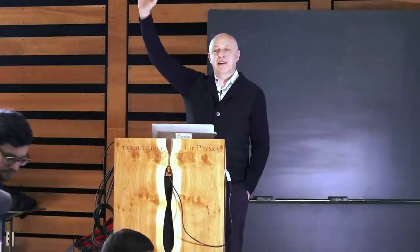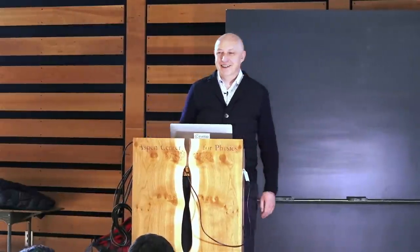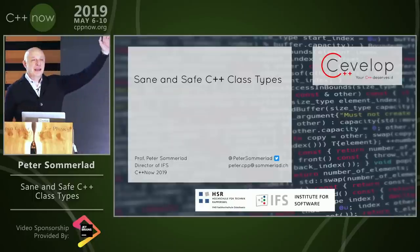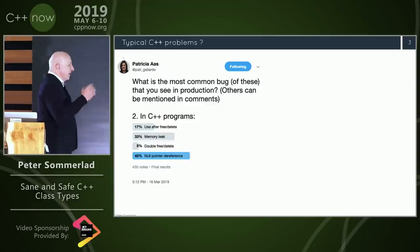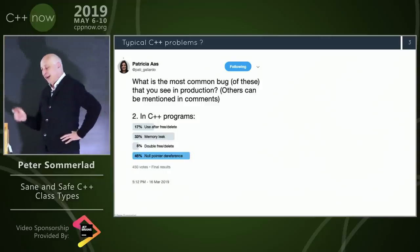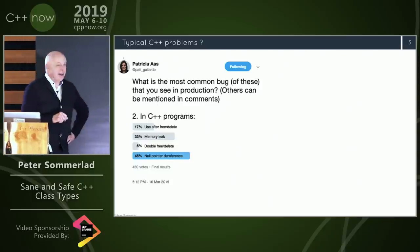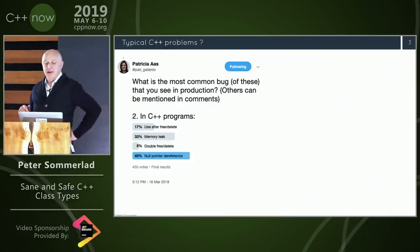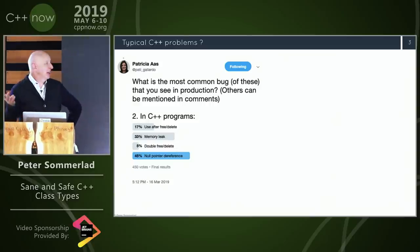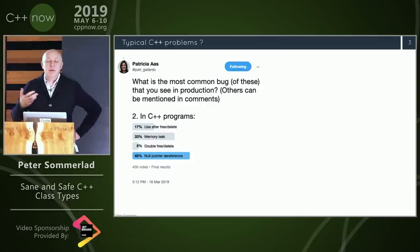Patricia asked a question on Twitter — a poll about typical problems you get when writing C++. The options were: use-after-free, memory leaks, double free/delete, double deletes, or null pointer dereference. This shows the distribution of what people reported as their most common error.